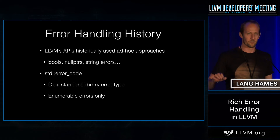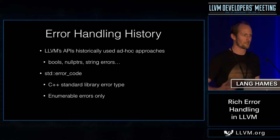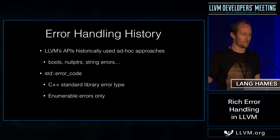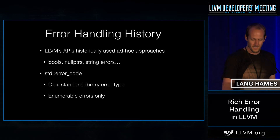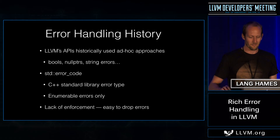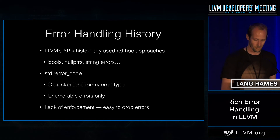std::error_code is only good for enumerable errors. You can say what went wrong, but you can't describe it in detail. For instance, you can say 'file not found', but you can't say the file at this particular path was not found, because you can't enumerate all the paths up front. And all of these mechanisms for error handling suffer from a lack of enforcement — it's really easy, even after you've detected an error situation, to fail to propagate that error or to drop it on the floor.